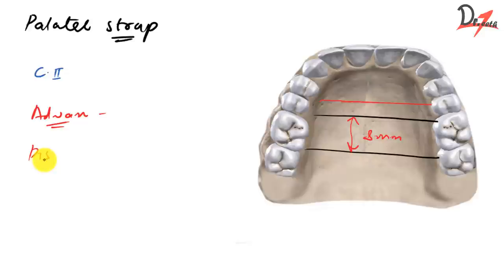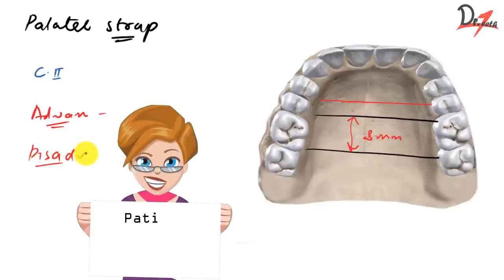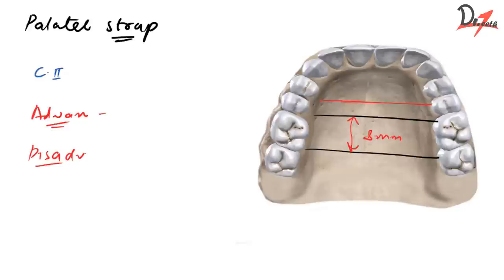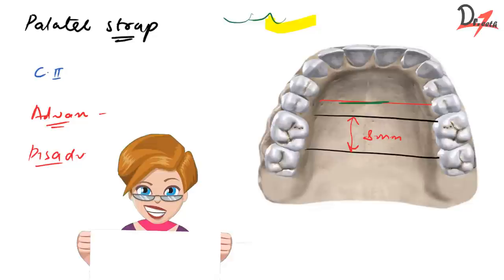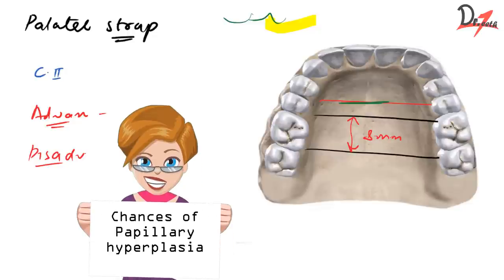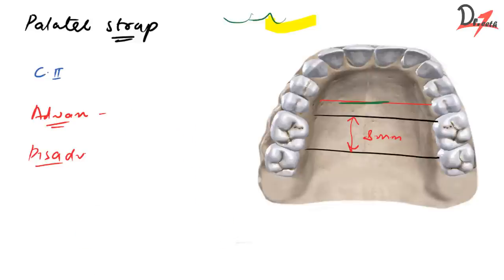The advantages are: more coverage, more rigidity, and better ability to counteract forces due to the L-beam effect. The disadvantage is patient discomfort from excessive palatal coverage. Try to keep the border posterior to the most prominent rugae so it is less detectable to the patient. Posteriorly it should be positioned anterior to the junction of soft and hard palate. Conditions like papillary hyperplasia can also occur, so advise patients on oral hygiene, appliance maintenance, and duration of wearing.